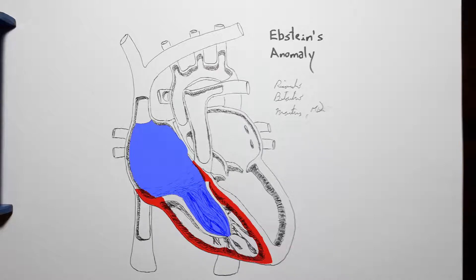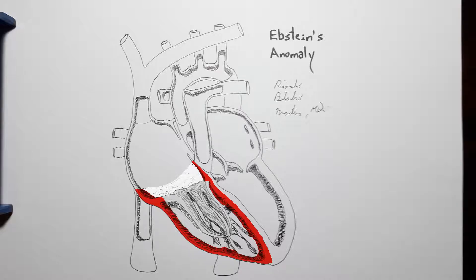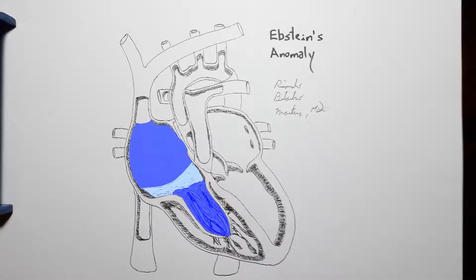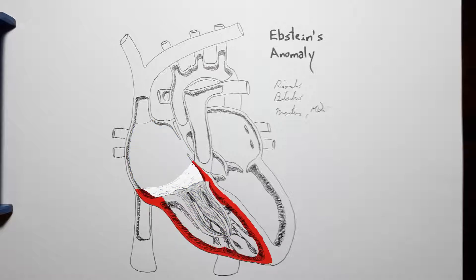...we will end up having a portion of wall that physiologically corresponds to the right ventricle, but is actually surrounding the right atrial chamber. This is called the atrialized portion of the right ventricle.